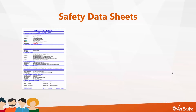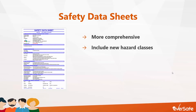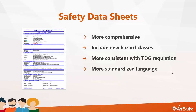While there are a number of similarities between the two documents, the 16-section SDSs contain different information and present the safety data in a different format to that of the 9-section MSDS. SDSs have a more comprehensive hazard classification criteria, include new classes of hazards, make physical hazard criteria more consistent with the transportation of dangerous goods regulation, employ a more standardized language, and utilize a new standardized format. The biggest thing is that it's much easier for your workers to find the information that's relevant to them using this format.